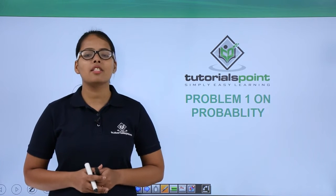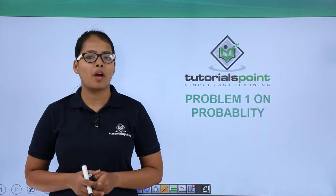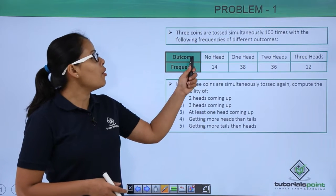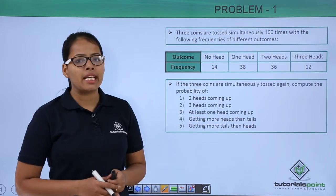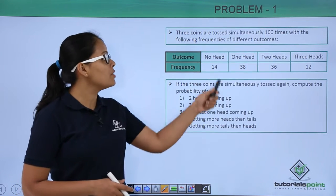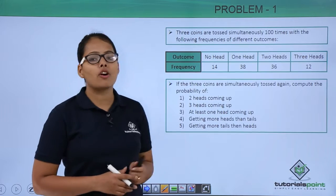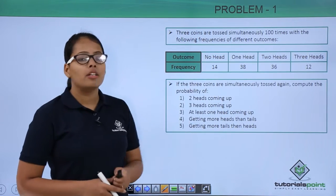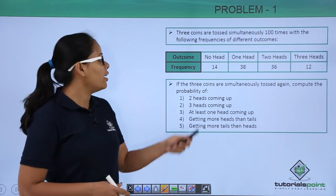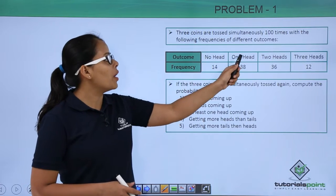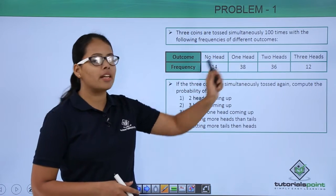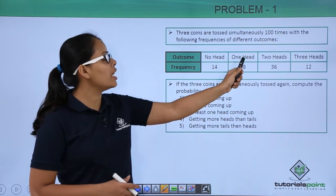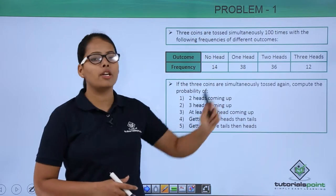Hey guys! Let's discuss this problem on probability. This problem says 3 coins are tossed simultaneously 100 times with the following frequencies of different outcomes. This table shows you that outcomes are no head, 1 head, 2 heads and 3 heads. Frequencies are 14, 38, 36 and 12.